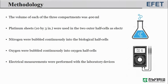The volume of each of the three compartments was 400 milliliters. Platinum sheets were used in the two outer half cells as electrodes. Nitrogen was bubbled continuously into the biological half cells. Oxygen was bubbled continuously into the oxygen half cells. Electrical measurements were performed with laboratory devices.